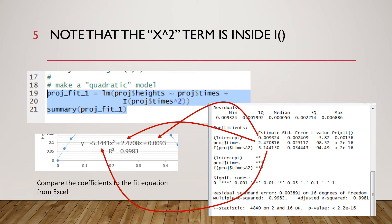The y is proj dollar sign heights and then there's the tilde. I'm in line 19 in the code and then the first part of the x is proj dollar sign times and then I'm saying plus capital I parentheses proj dollar sign times caret two. So we're adding a sort of a second set of x's where it's the times squared.